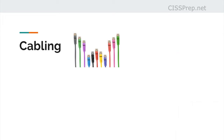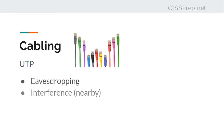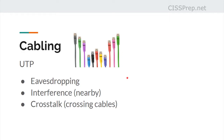Let's get into cabling. The first type to mention is unshielded twisted pair, which is the most common type of network cable. This type of cable is subject to eavesdropping, interference, and something called crosstalk. Interference comes from nearby devices, and crosstalk is when the cables themselves bleed over — information crossing between the wires within that cable.